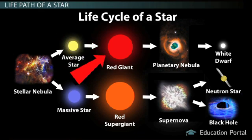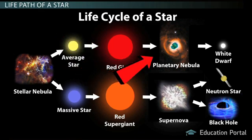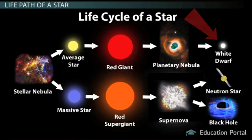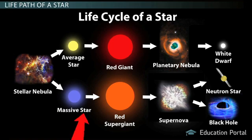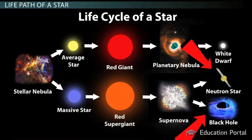The average star then becomes a red giant, a planetary nebula, and ends its life as a white dwarf. The massive star turns into a red supergiant, goes supernova, and ends up as a neutron star or a black hole, again depending on its size.